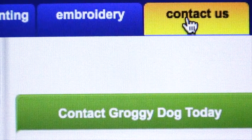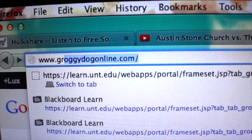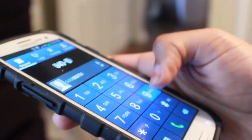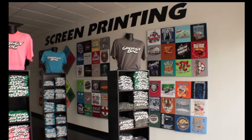There are four ways to begin your order process with Groggy Dog: fill out an online questionnaire through our website, email us, call us on the phone, or come meet with us face to face at either our Denton or Lewisville location.